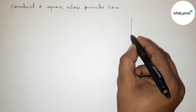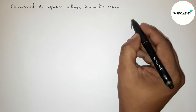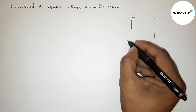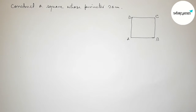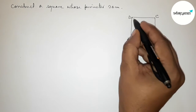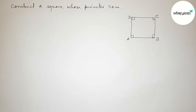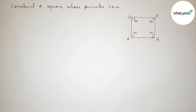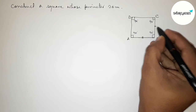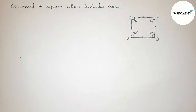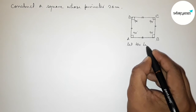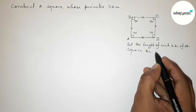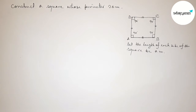First we have to find out the length of each side of the square. Drawing a square roughly and taking points A, B, C, D. We know that all angles of a square are equal and 90 degrees, and the length of each side are equal. Let the length of each side be 'a' centimeters.